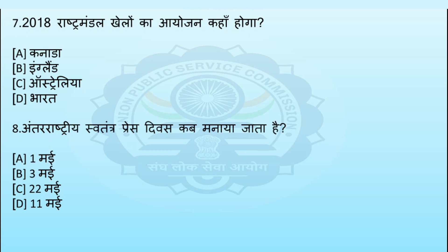अगला प्रश्न: 2018 राष्ट्रमंडल खेलों का आयोजन कहाँ होगा? Option A: Canada, Option B: England, Option C: Australia, Option D: भारत। इस प्रश्न का सही उत्तर Option C – Australia है।